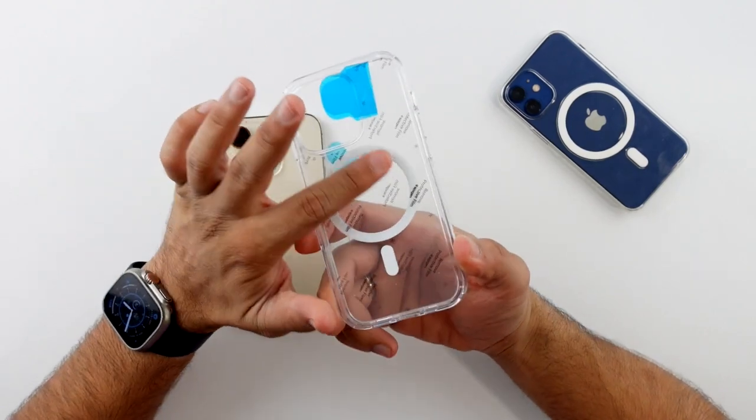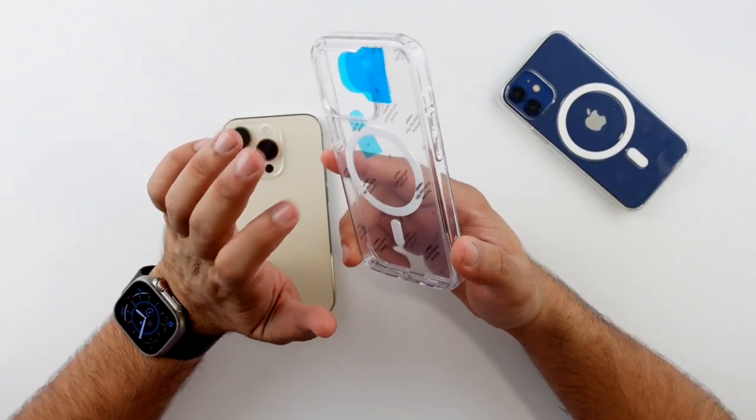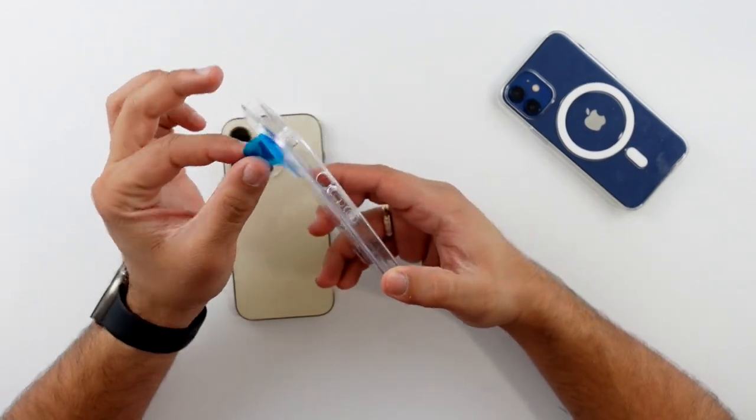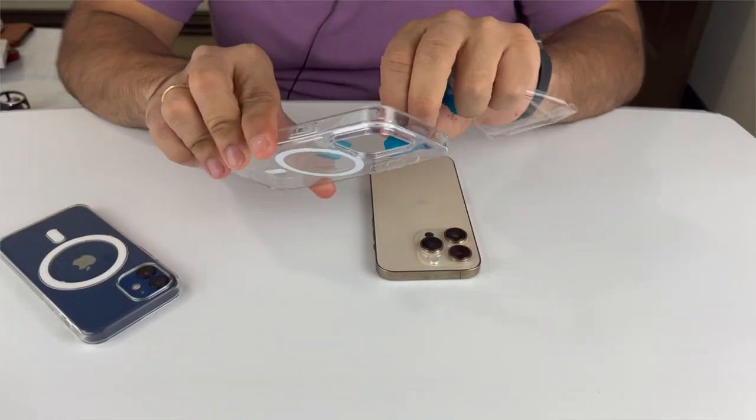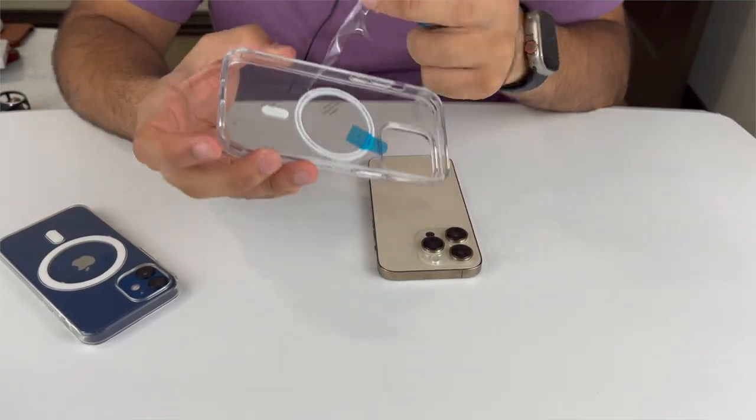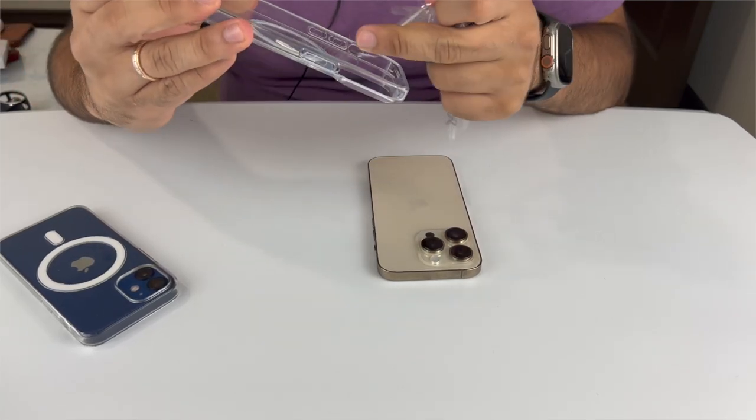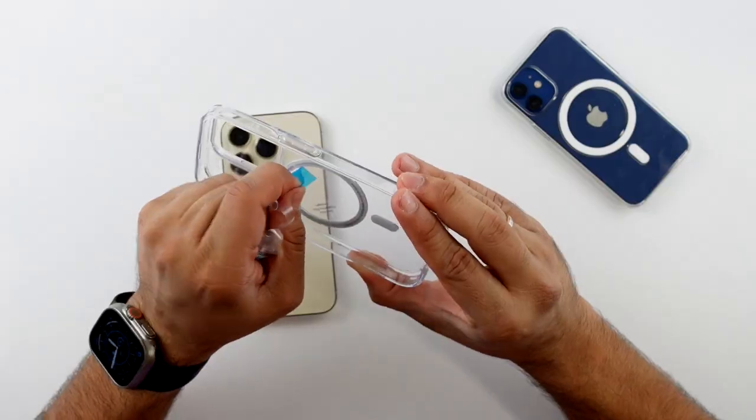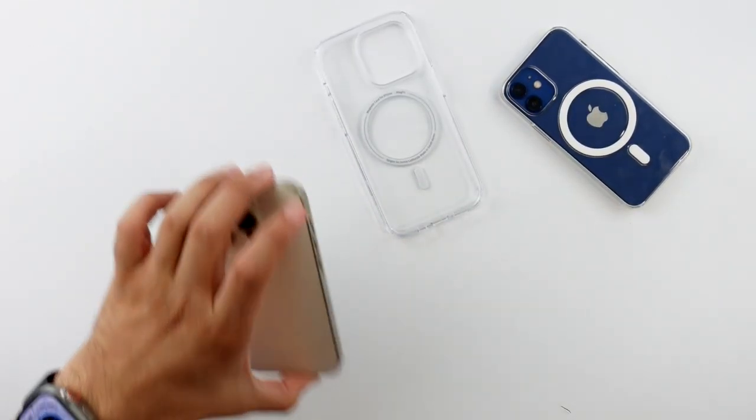It does have the MagSafe ring in white. This does come in a couple of color options: you can get it in black, you can get it in carbon fiber, I just went for the white one. Let me go ahead and remove this plastic protective covering. There we go. And the last one. With all the plastic removed, let's go ahead and put this on the phone.